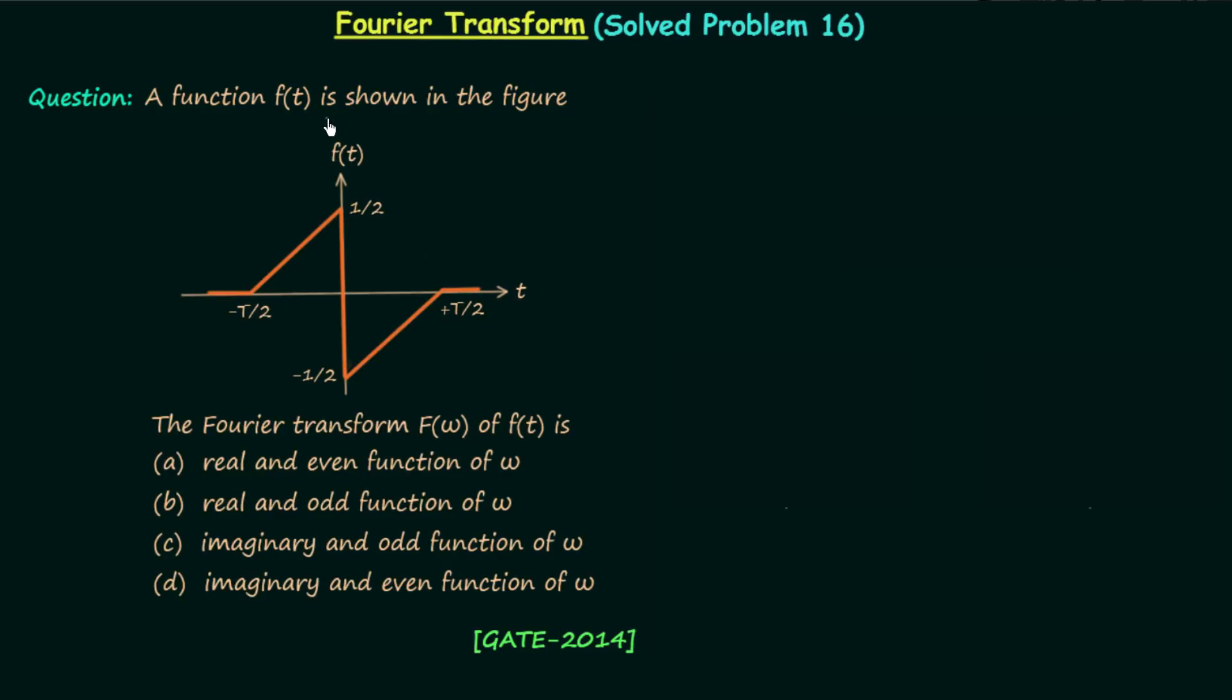A function f(t) is shown in the figure. You can see the waveform of function f(t) and we are required to comment about the nature of Fourier transform F(ω). F(ω) is the Fourier transform of function f(t), and we need to comment about the nature of F(ω).